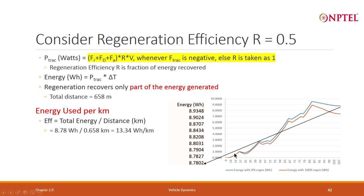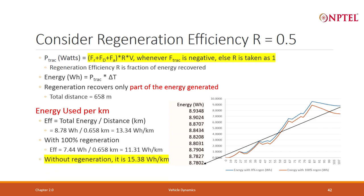In the beginning both curves are the same, but regeneration does not recover the full amount — only 50 percent. Since R = 0.5, it is not recovering fully, so I am consuming more: 8.78 watt-hours. In 658 meters, my average energy consumed is 13.34 watt-hours per kilometer.